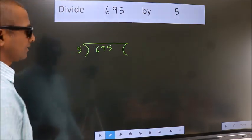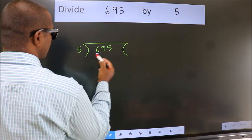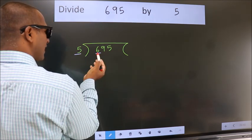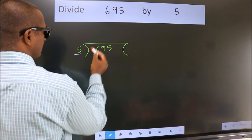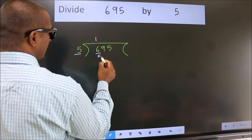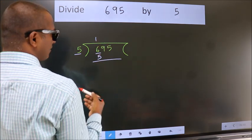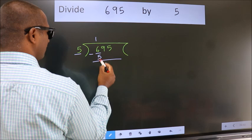Next, here we have 6, here 5. A number close to 6 in the 5 table is 5 once 5. Now we should subtract. We get 1.